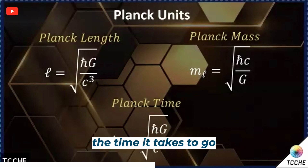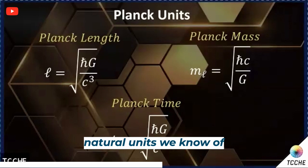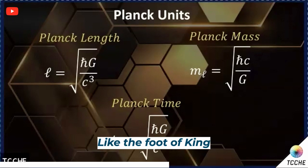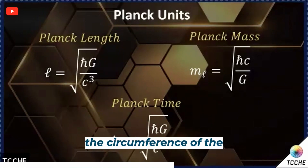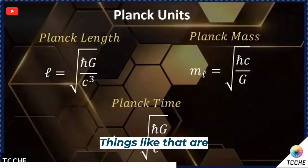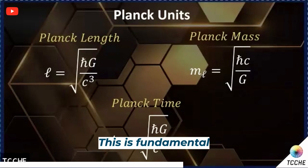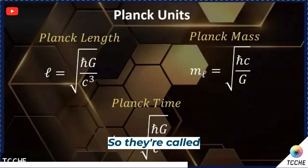And then you get a time — the time it takes to go around the circle — and you can get a temperature and so on. So these are the only natural units we know of in physics or in the world. All other units of measurement are arbitrary — like the foot of a king, or the circumference of the earth to make the meter. But these are not, because they're based on fundamental values we measure in the universe — fundamental constants of the universe making units of measurement. So they're called natural units, and they emerged from Planck's discovery.